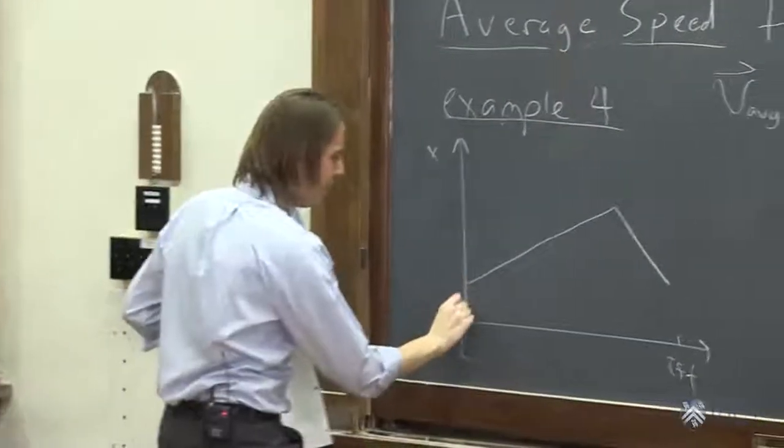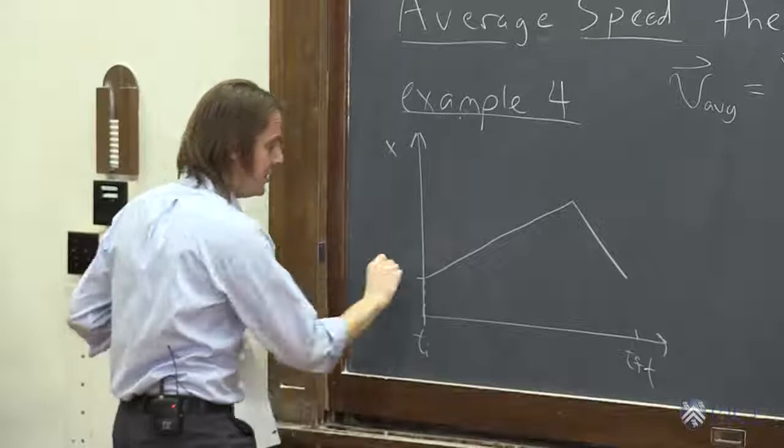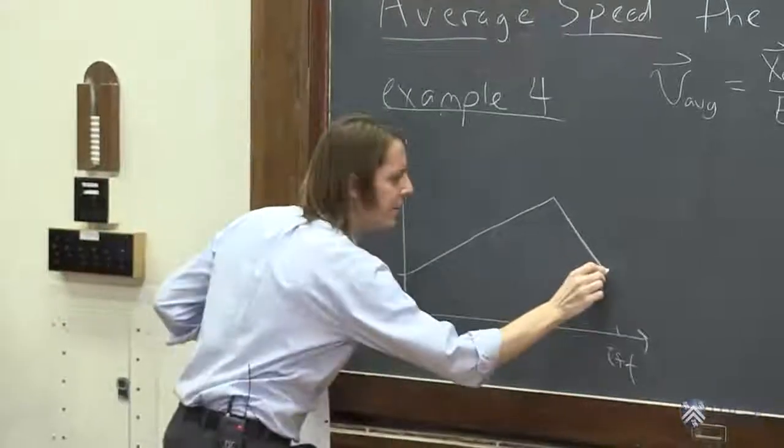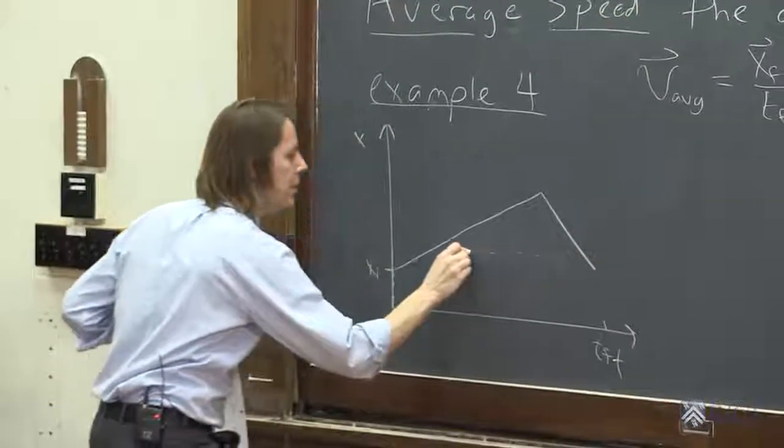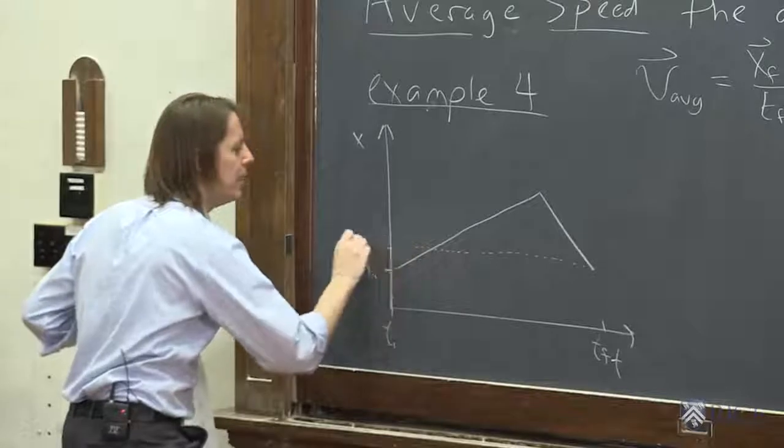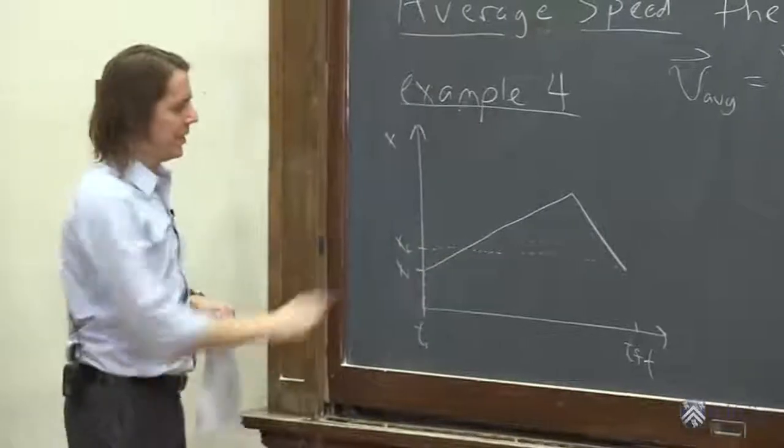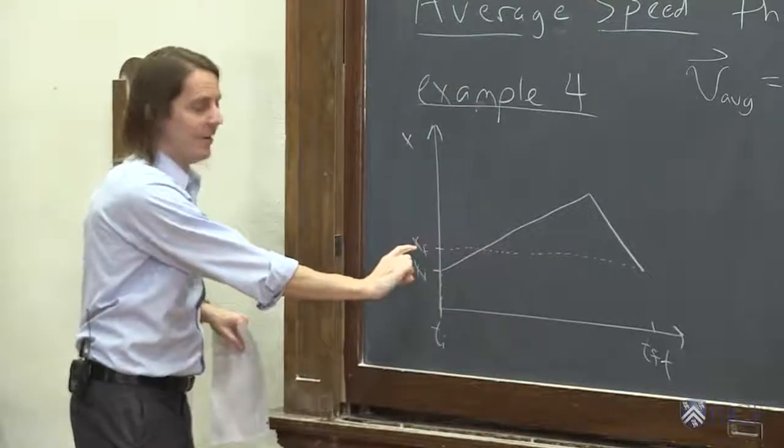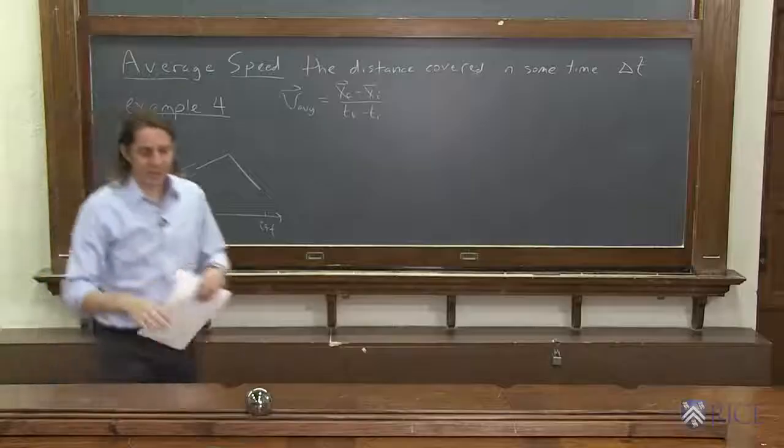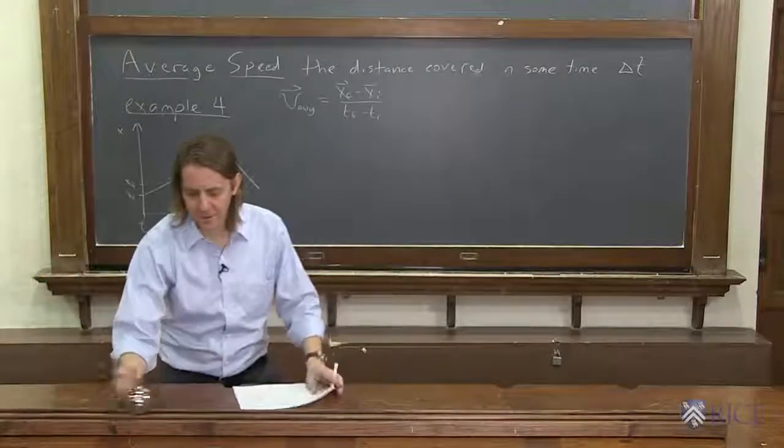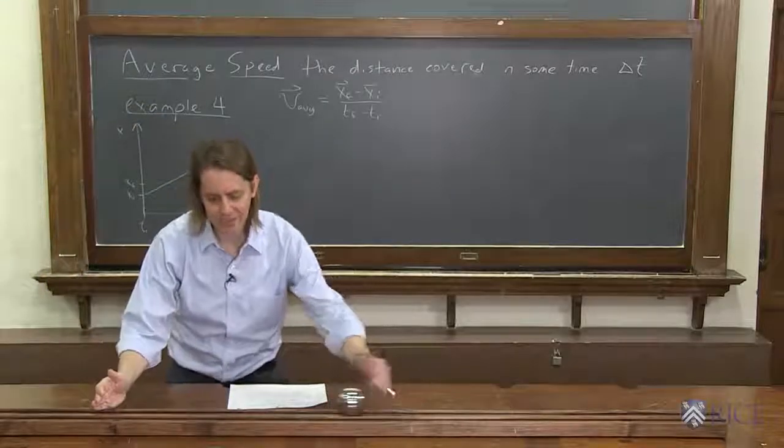But if you looked at it, you could say we could do our little lines. There's x initial. And then here is, oh, that's supposed to be straight. Here is x final. So you can see he actually didn't get very far. I started him sort of here, and he went, and he came back faster, and I stopped him here.